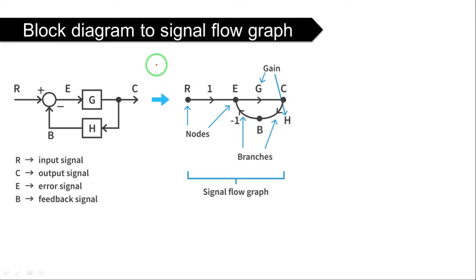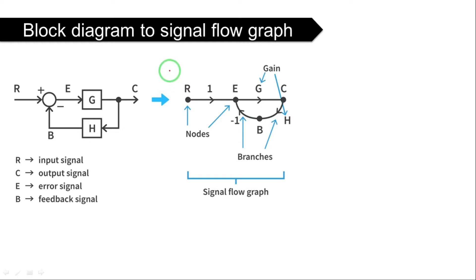That technique is Mason's gain formula. Mason said that instead of the block reduction technique, we can use a formula designed by S.J. Mason. But to use this formula we need a signal flow graph, so for that purpose we have to learn the conversion from block diagram to signal flow graph. After that we will see how to find the transfer function from the signal flow graph with a simple formula.